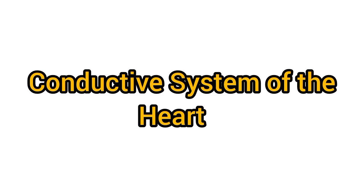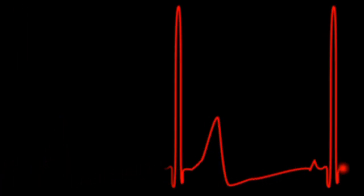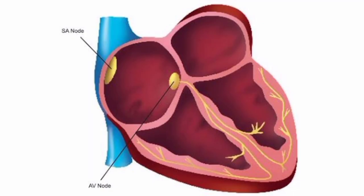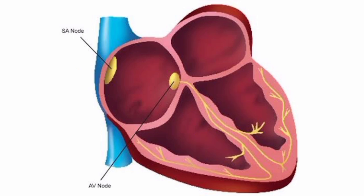The human heart has a specialized conductive system through which impulses from the sinoatrial node, known as the SA node, are transmitted to other parts of the heart. The conductive system of the heart is formed by modified cardiac muscle fibers. These fibers are specialized cells which conduct impulses rapidly from the SA node to the ventricles. The conductive tissues of the heart are also called the junctional tissues.